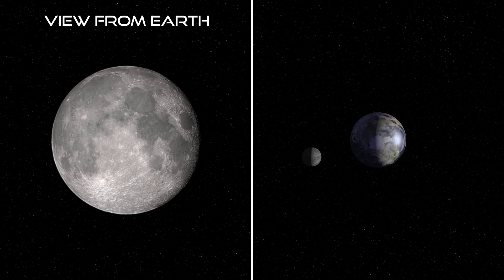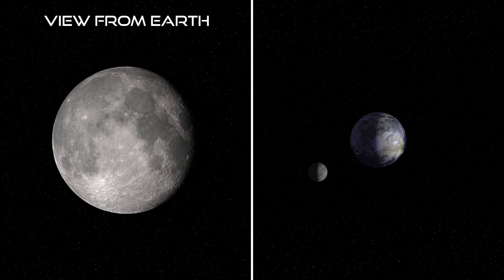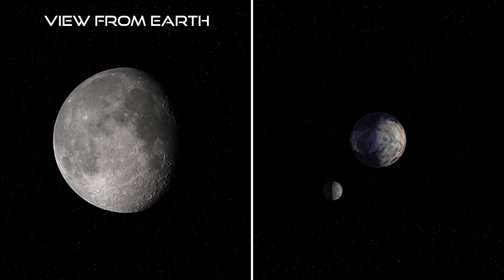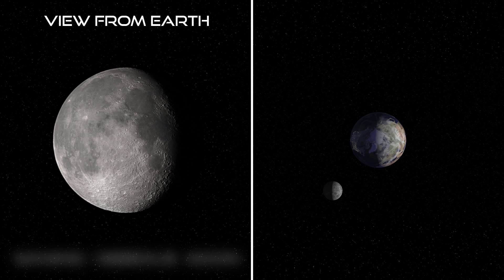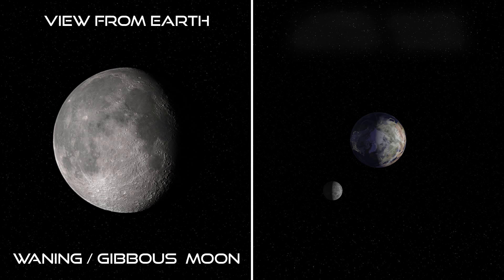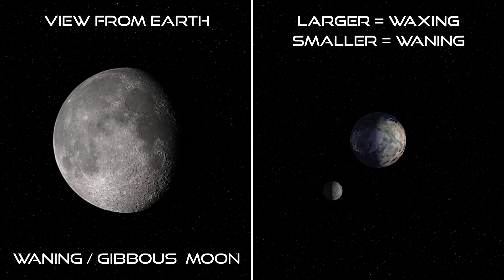Now the Moon will begin to get smaller in size as seen by us here on Earth. This is called a Waning Moon and it is also Gibbous. So as the Moon gets larger, it is said to be waxing, and as it gets smaller, the Moon is said to be waning.